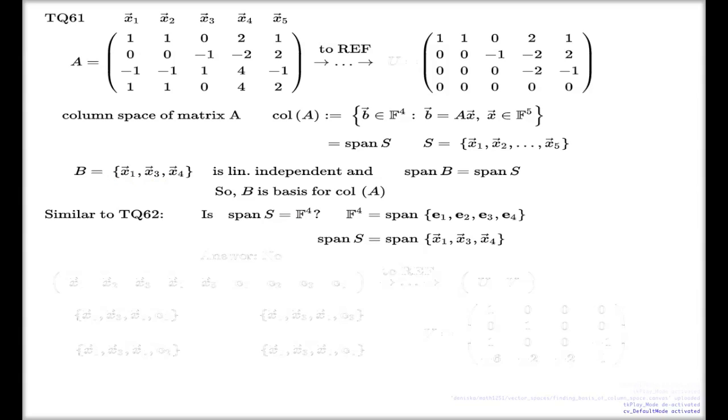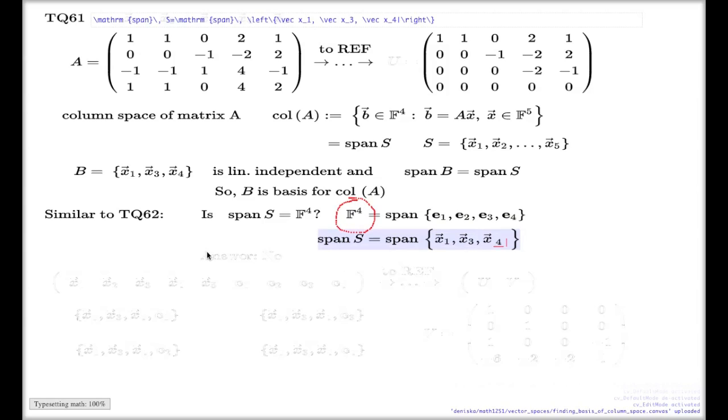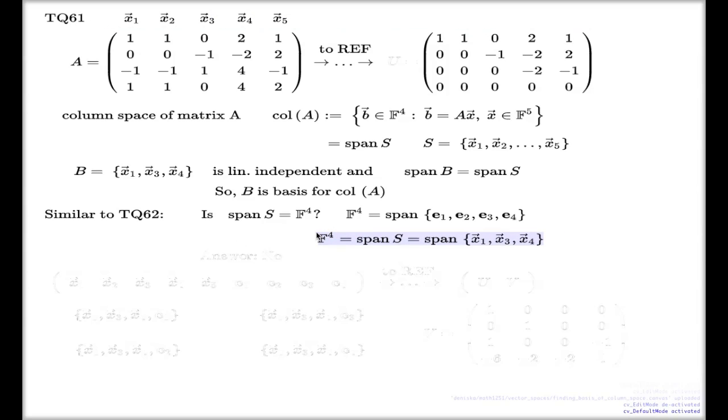And here's my contradiction. Because, you see, I'm spanning the same vector space F^4 with two different sets of linearly independent vectors, and they're having different numbers of vectors. That's a contradiction with my comparison theorem from the previous slide. So my assumption that this could be true is wrong.